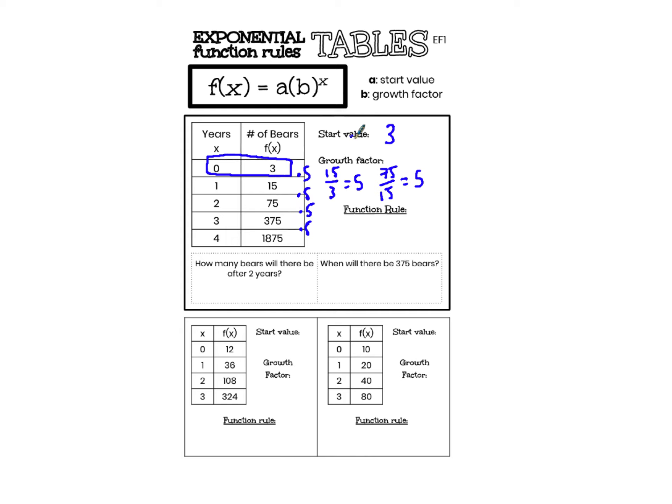Now I have my start value 3, my growth factor 5, and I can write my function rule. When I'm writing my function rule I always start with f(x) or y equals, and then I write my start value a, 3, times my growth factor 5 to the x. It's also totally fine with me if you prefer to write this as f(x) equals 3 times 5 to the x. Those are equally okay. It shows me I start with 3 and then I repeatedly multiply it by 5.